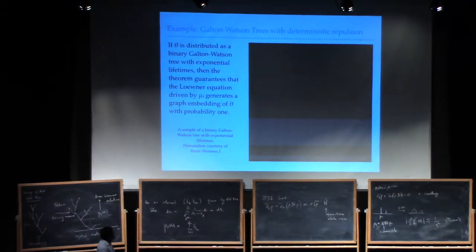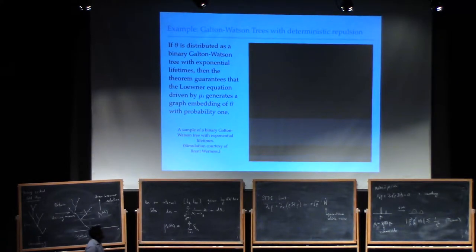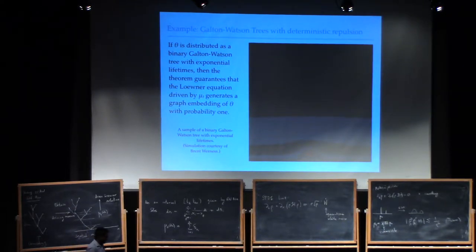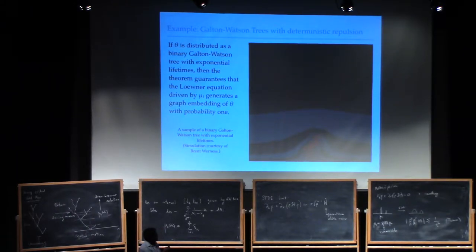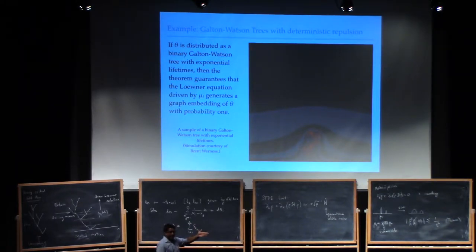The true theorem is really to do with evolutions of this nature. These are trees generated by this mechanism, and the theorem is really that you can take any Galton-Watson tree and embed it in a natural way in the upper half plane. This one looks different because there's no jitter — these things are not moving around.